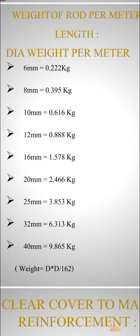Weight of steel is equal to D square, or D into D, by 162. This value has to be remembered for any aspirant, any government exam preparation students, civil engineering students, and for all site engineers.